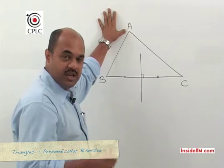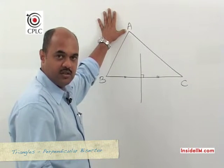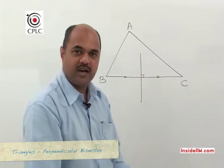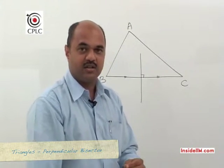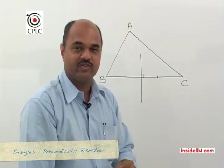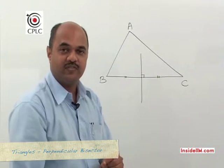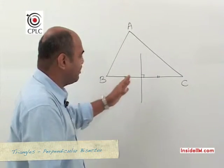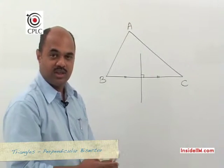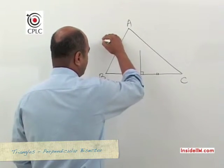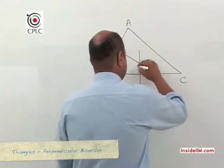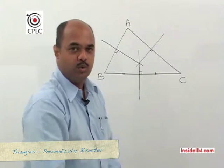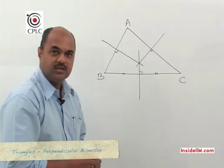Because the perpendicular bisector may not pass through a vertex of the triangle, we cannot refer to its length in the same way we can for a median, altitude, or angle bisector. If we draw all three perpendicular bisectors of the triangle, they meet at one common point called the circumcenter, labeled P.